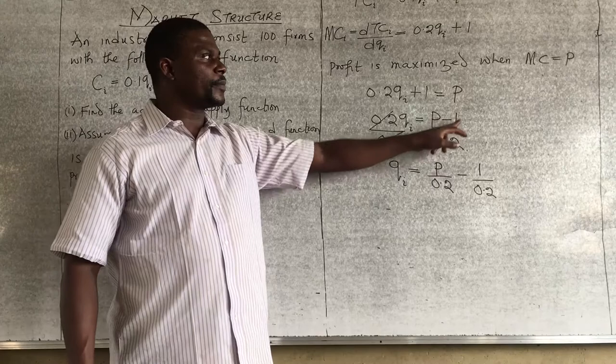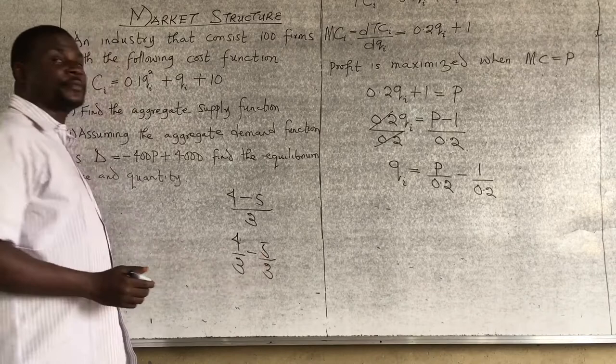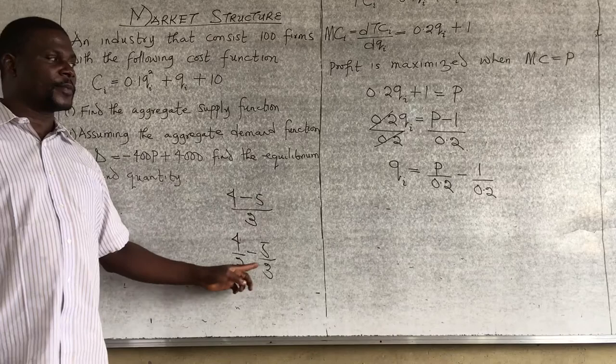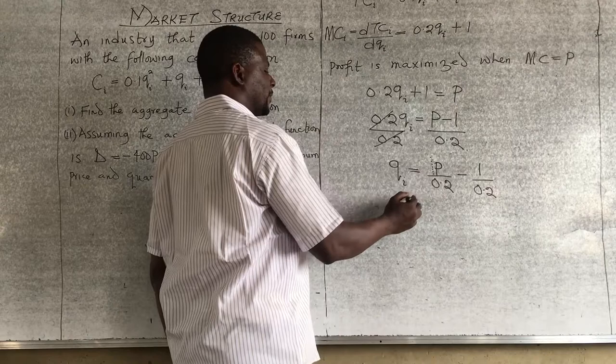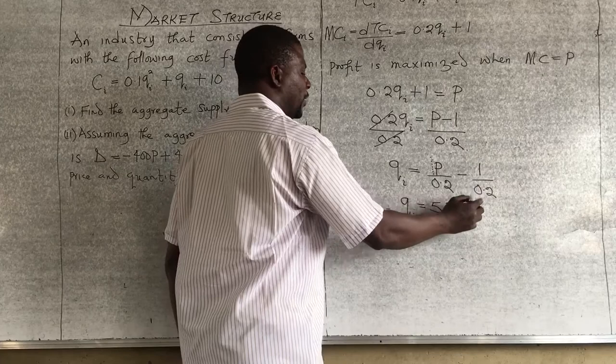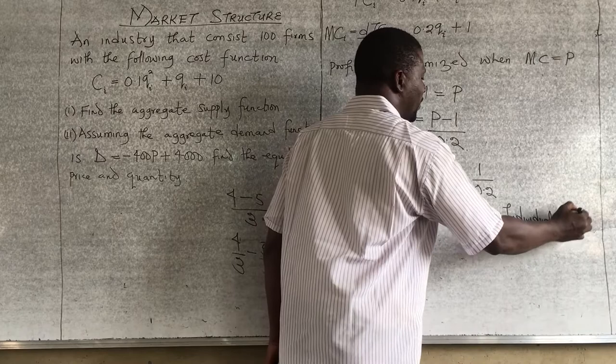It's mathematical: if you have (4 minus 5) over 3, that's 4 over 3 minus 5 over 3 — you can share the denominator to each numerator. So, 1 divided by 0.2 gives 5. That gives Q_i equals 5P minus 5. This is the individual supply function.